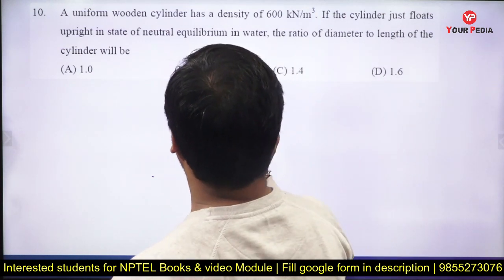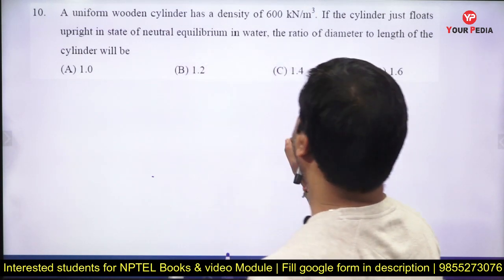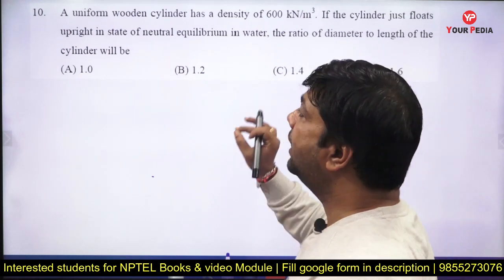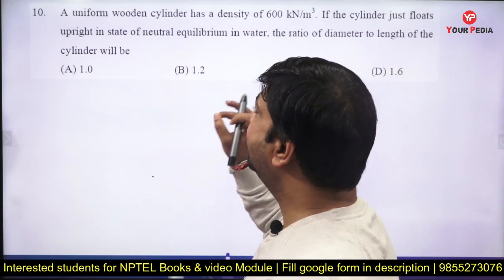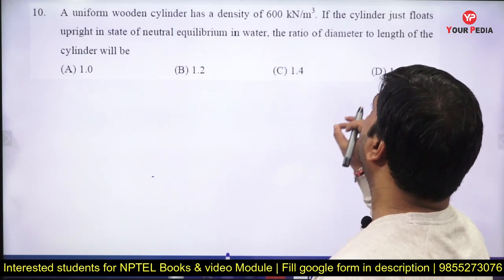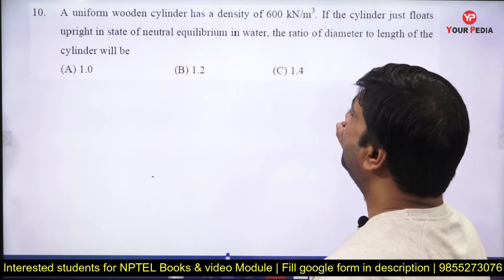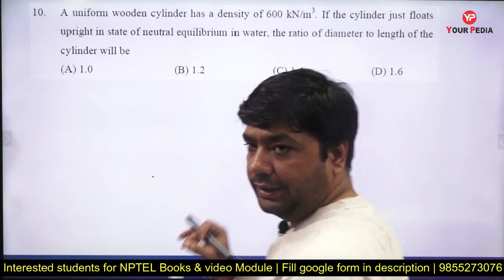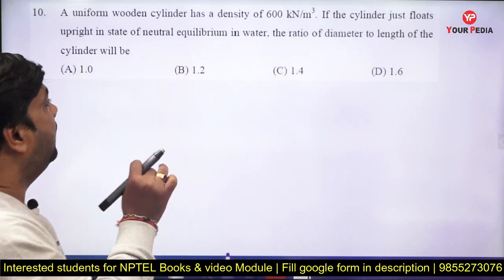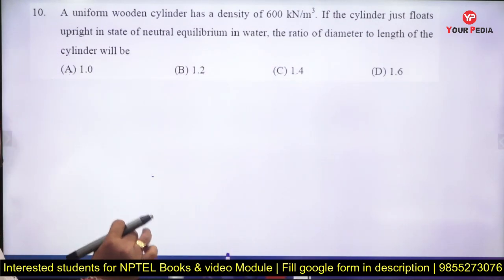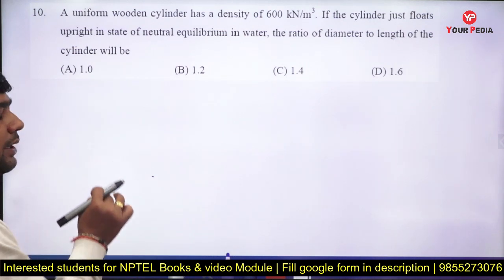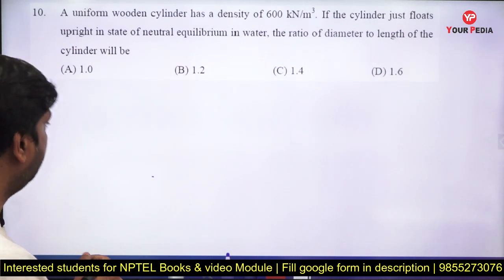The question says: a uniform wooden cylinder has a density of 600 kg per meter cube. If the cylinder floats upright in a state of neutral equilibrium in water, the ratio of diameter to length of the cylinder will be — we have to find out the ratio of diameter to length of the cylinder in the case of neutral equilibrium.